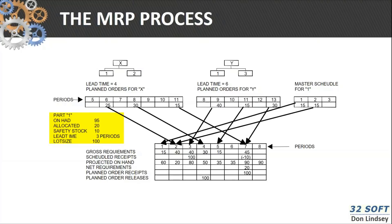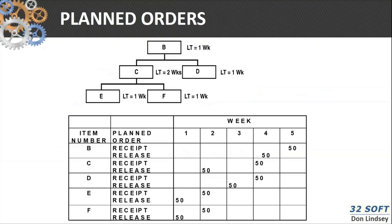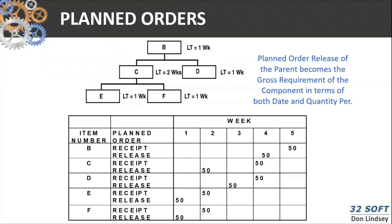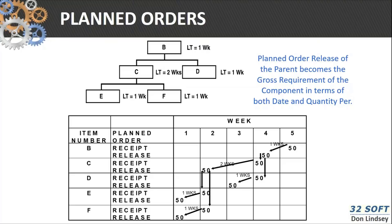Looking at planned orders for release versus receipt: the planned order release of the parent becomes the gross requirement of the component in terms of both date and quantity. So if you've got 50 at period 5 for that B item, that's going to drive down as a release. Because the lead time of B is one period, that 50 release translates to a receipt in period 2 after the lead time offset. B takes C and D, so that 50 release cascades down accordingly. That's how the system calculates the explosion of those net requirements.